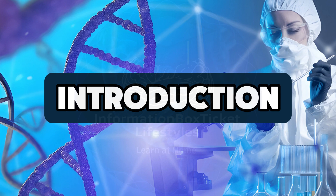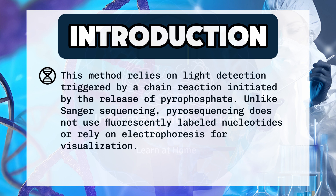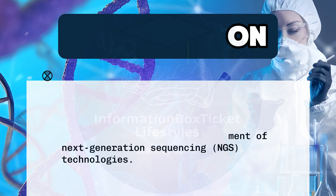Pyrosequencing is a sequencing technique that determines the order of nucleotides by detecting the release of pyrophosphate (PPi) as nucleotides are incorporated, allowing real-time monitoring of DNA synthesis. This method relies on light detection triggered by a chain reaction initiated by the release of pyrophosphate. Unlike Sanger sequencing, pyrosequencing does not use fluorescently labeled nucleotides or rely on electrophoresis for visualization. While particularly useful for applications requiring short reads and real-time data analysis, pyrosequencing has now largely been supplanted by newer technologies, though it played a significant role in the development of next-generation sequencing (NGS) technologies.